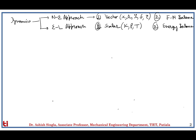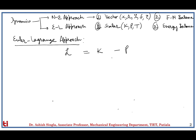Let's go ahead with the Euler-Lagrange approach. First, we need to define the Lagrangian, which equals the total kinetic energy of the system minus the total potential energy. Before proceeding, we need to understand the functional dependence of these quantities. The potential energy is a function of position and time of each body, where q represents the position. The kinetic energy is a function of velocity and time. To understand this fully, let's take an example.